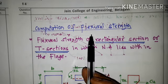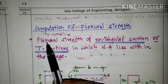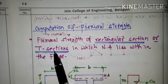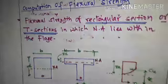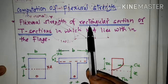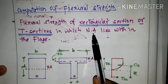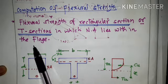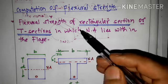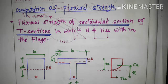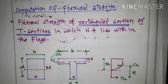Today we are going to discuss the computation of flexural strength — how to determine the flexural strength of a given section. It is categorized into two sections: first, flexural strength of rectangular section or T-section where the neutral axis lies within the flange. A T-section will act as a rectangular section only when the neutral axis is lying within the flange.